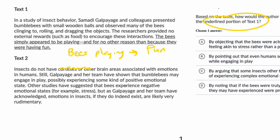Other studies have suggested that bees experience negative emotional states. But as this researcher and her team have acknowledged, emotions in insects, if they do indeed exist, are likely very rudimentary — a good vocabulary word meaning something like 'basic.' So the idea is they would agree the bees could have some kind of positive emotion, but it's a very rudimentary kind. I'll just write 'rudimentary fun' — they're not having advanced, sophisticated levels of fun that humans might encounter.